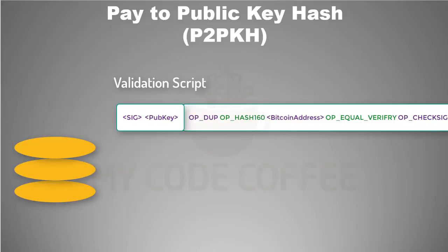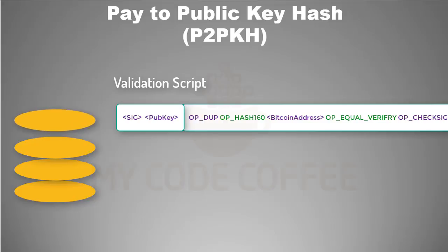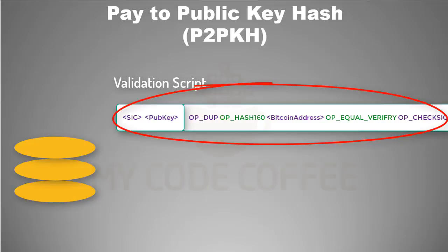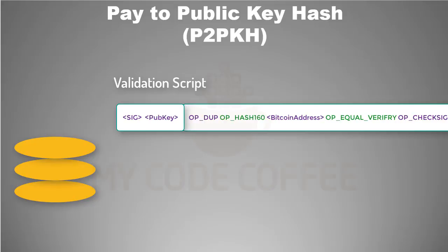A stack is a very simple data structure which can be visualized as a stack of items. It uses two operations: push and pop. Push adds an item on top of the stack and pop removes an item from the top of the stack. It is called a last-in-first-out data structure because any operation is done only on the topmost item. Here is the combined validation script — we will push items onto the stack and perform operations on the topmost item when needed.